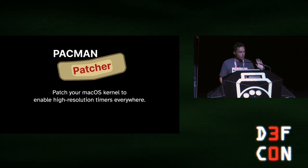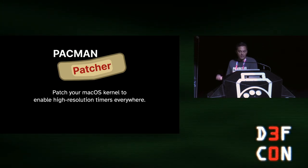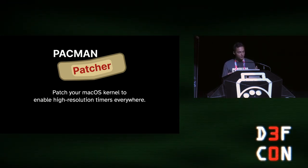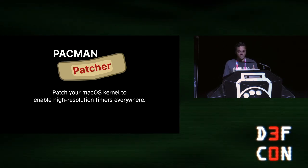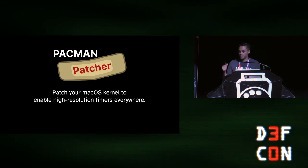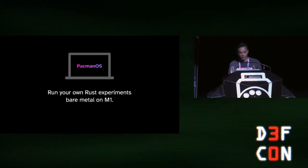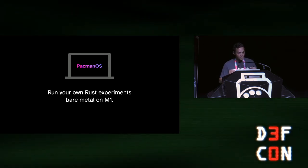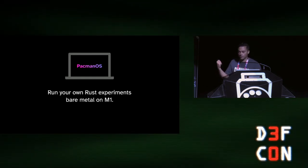Next up is PAC-MAN Patcher. The problem with M1 is that you don't have really great high-performance timers in user space. When you're doing deep reverse engineering tasks and trying to build a model of how the system works, you need really fine-grain timing. PAC-MAN Patcher is a patch to macOS itself that enables these timers for user space — no tricks needed, just run it once. PAC-MAN OS is for really deep reversing where you need bare metal control — give it some Rust code and it boots right on the device.